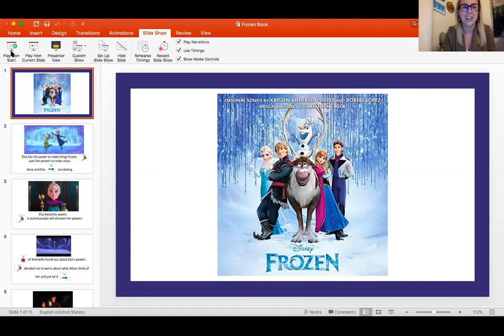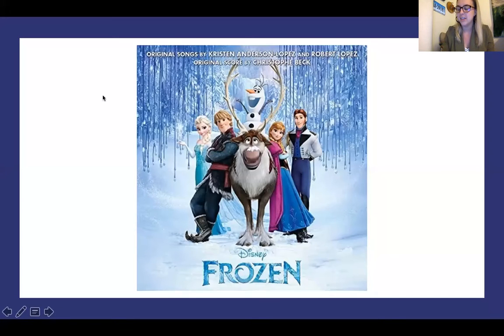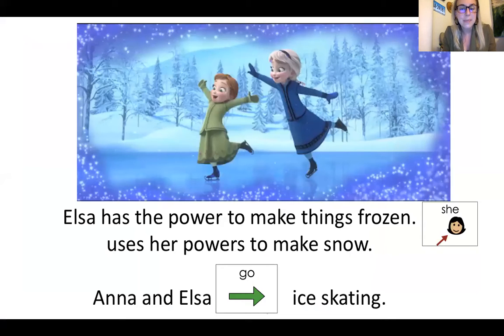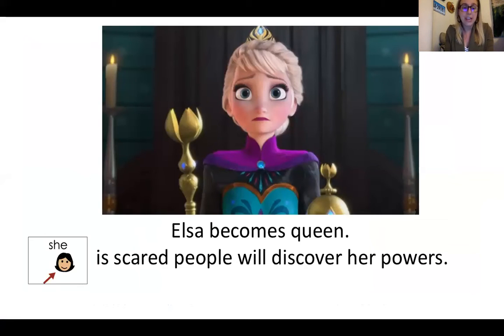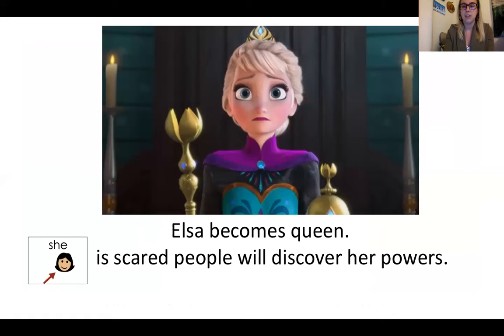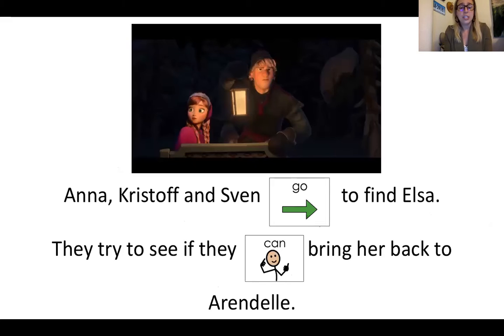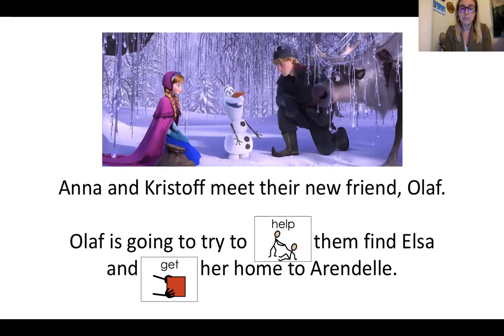Okay, so I'm going to share my screen again and we're going to read Frozen. Elsa has the power to make things frozen. She uses her powers to make snow. Anna and Elsa go ice skating. Elsa becomes queen — she is scared people will discover her powers. All of Arendelle found out about Elsa's powers and she decided not to worry about what others think of her and just let it go. Anna, Kristoff, and Sven go to find Elsa and try to bring her back to Arendelle. Anna and Kristoff meet their new friend Olaf, who is going to try to help them find Elsa and get her home to Arendelle.